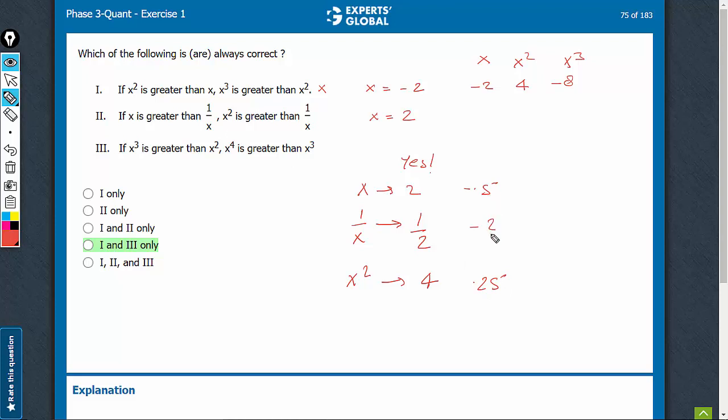x is greater than 1 upon x, and x squared is also greater than 1 upon x. So even in this case, we get yes as an answer. We are not able to get a no, and therefore, this is something that has to be correct.